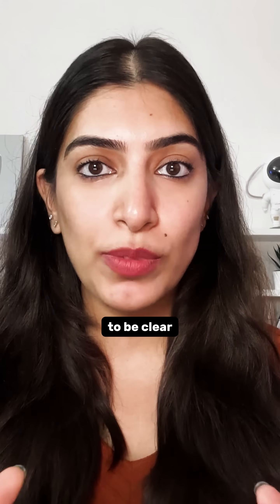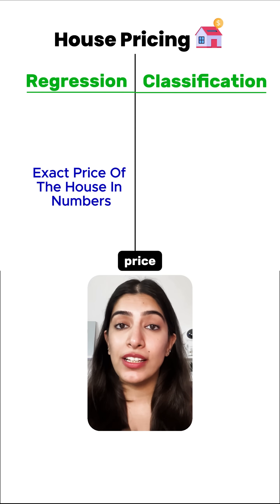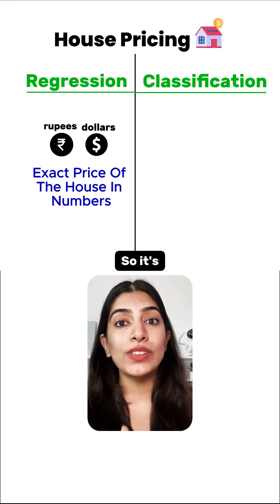We are going to take a lot of examples. It is going to be clearer. If we talk about house pricing, if we are going to predict the exact price of the house, it's a numerical value, so it's a regression problem.